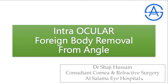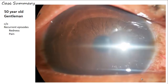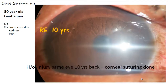An interesting case of an intraocular foreign body removal from the angle. A 50-year-old gentleman complained of recurrent episodes of redness and pain in the right eye since 10 years. There is a history of injury in the same eye 10 years back, for which corneal suturing was done.